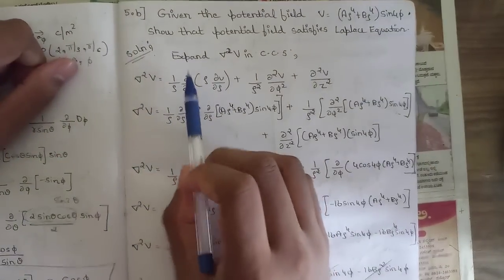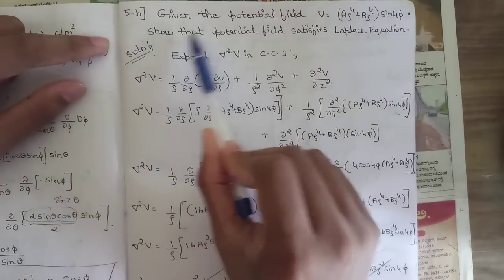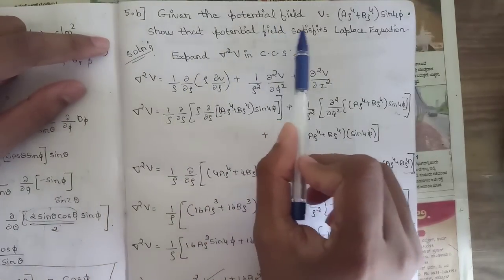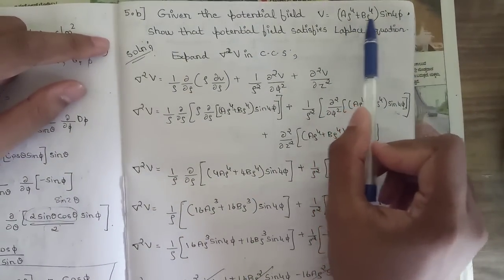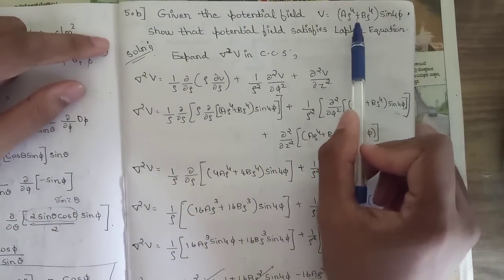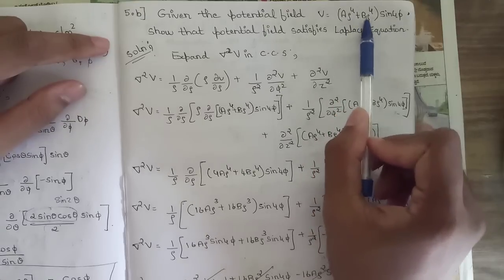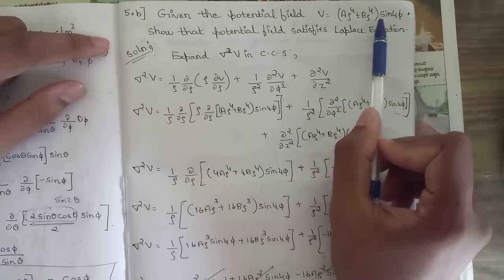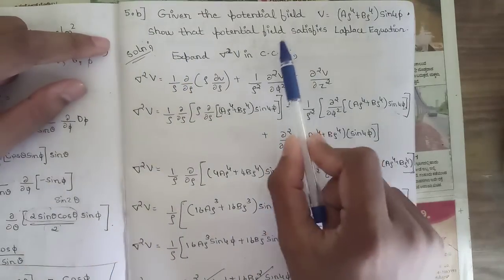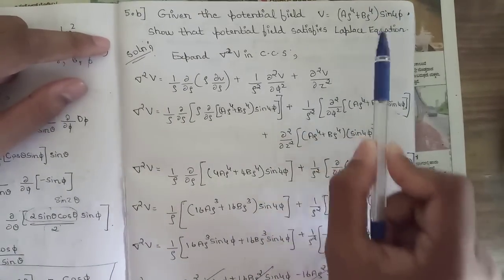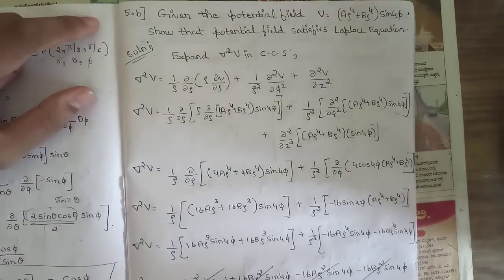The next question: given the potential field V = aρ⁴ + bρ⁴ sin4φ, show that the potential field satisfies the Laplace equation.